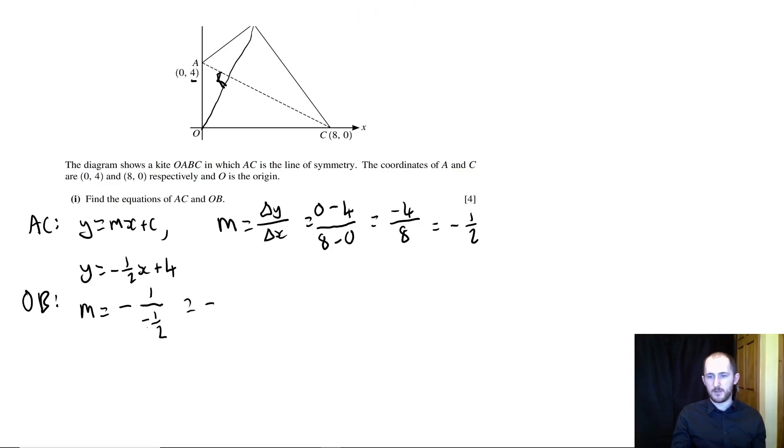And what does that mean? Well, perpendicular lines have inverse reciprocal gradients. So that's fancy talk for basically saying that the gradient is going to be the negative of 1 over the gradient. So that's going to be minus 1 over minus a half, which is 2.